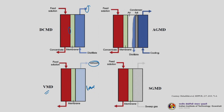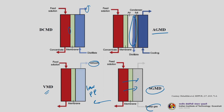Air gap membrane distillation (AGMD) is a different configuration: there is an air gap between one side of the membrane and the downstream permeate side, with the cooling or condenser side beyond that. In sweep gas membrane distillation (SGMD), similar to VMD, low vapor pressure on the permeate side is maintained using a sweep gas. The components with higher partial pressure on the upstream side will pass through at a faster rate to the permeate side.